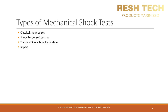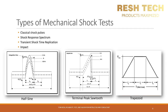Now let's learn about types of mechanical shock events simulated using different shock test systems. The first type is classical shock pulses: the half sine, the terminal peak sawtooth, and the trapezoid. The main parameters to keep in mind are the amplitude in G's peak, the pulse duration typically expressed in milliseconds, and the pulse direction — whether you run the test in the positive direction, negative direction, or both.